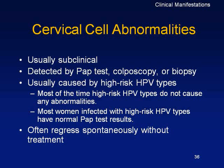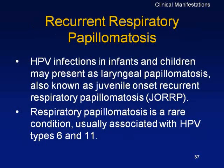Recurrent respiratory papillomatosis is a very common condition, especially juvenile-onset laryngeal papillomatosis in the larynx. These tiny warts can be dissected but cause difficulties with talking, breathing, and so on. They are associated with different serotypes of HPV.